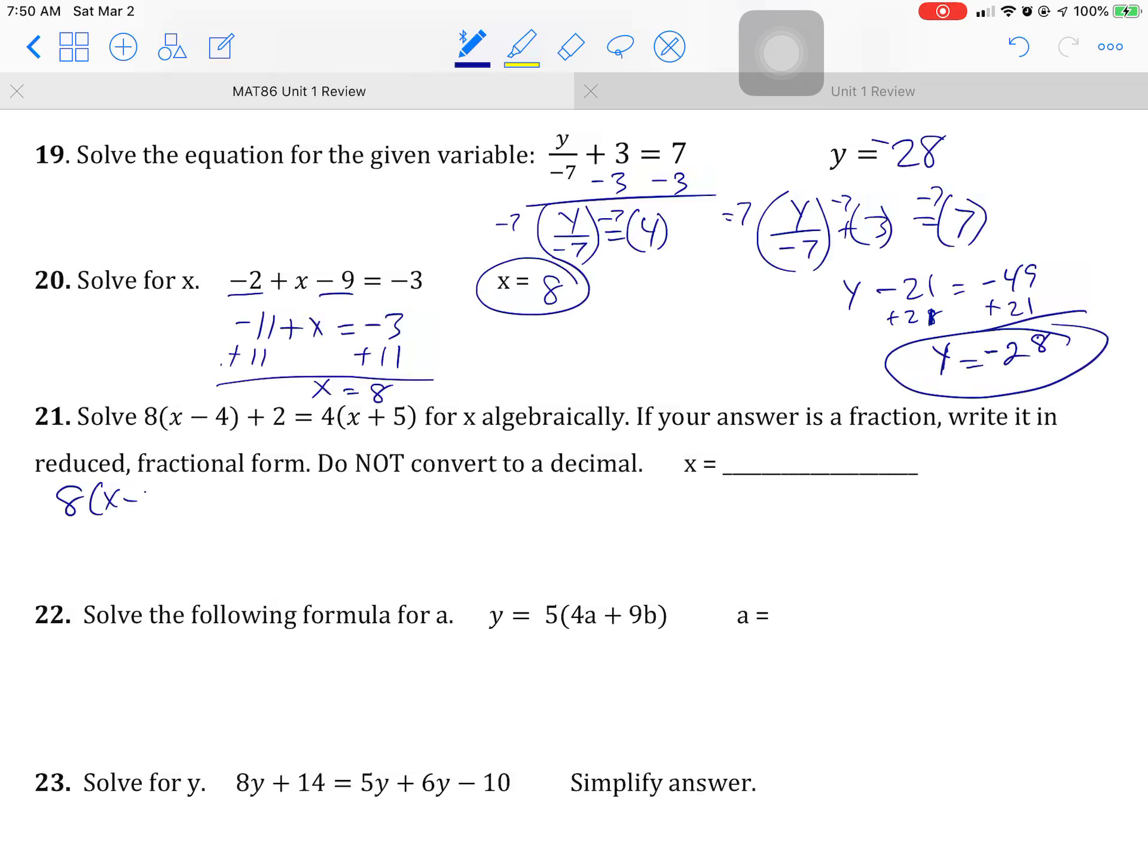8. That's a 4. Plus 2 equals... So we just have a lot of distributions going on here. So this is 8X minus 32 plus 2 equals 4X plus 20. Combine like terms. 8X minus 30 equals 4X plus 20.